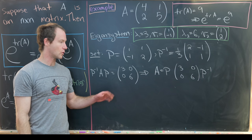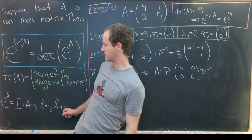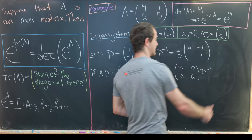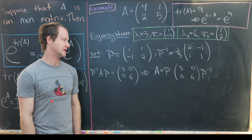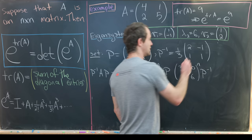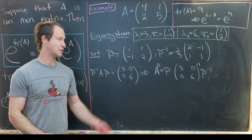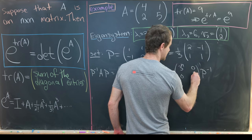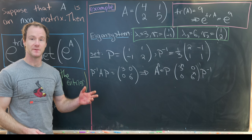We actually need A to the n, since we're calculating the matrix exponential. If we multiply A by A, we get P · diag · P inverse · P · diag · P inverse, and the middle P, P inverse pairs cancel. Inductively, A to the n = P · [3,0;0,6]^n · P inverse, and a power of a diagonal matrix just exponentiates the entries, giving [3^n, 0; 0, 6^n] on the inside.